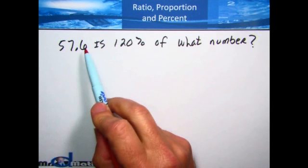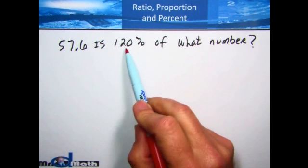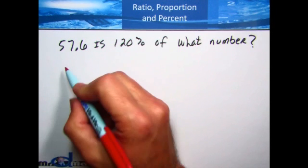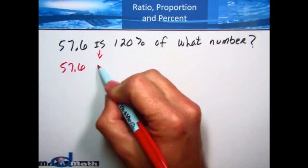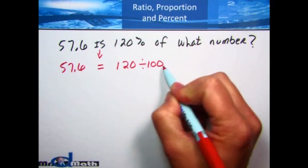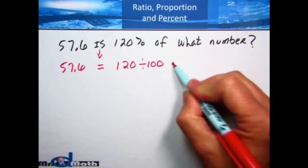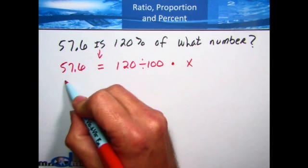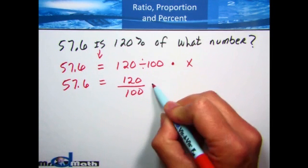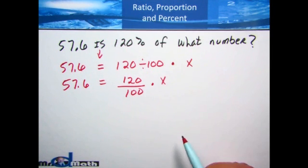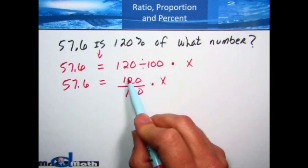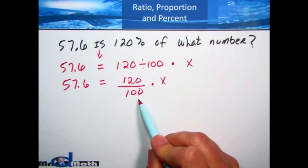Let's take a look at this one: 57.6 is 120% of what number? Let's translate this into an equation. 57.6 is going to be my equal sign. 120% means 120 divided by 100, or written as a fraction, 120 over 100 times we don't know — that's x. So: 57.6 equals 120 over 100 times x. What's happening to x? It's being multiplied by 120 and divided by 100 at the same time.